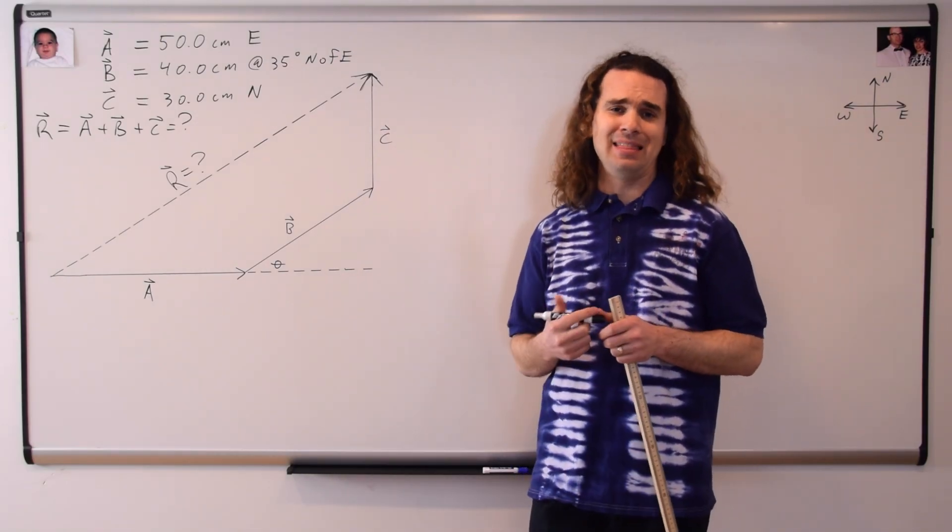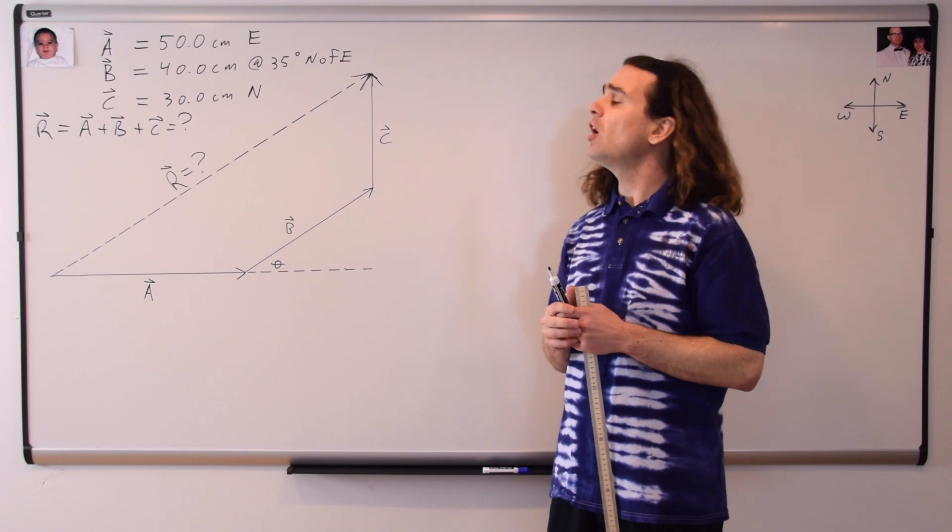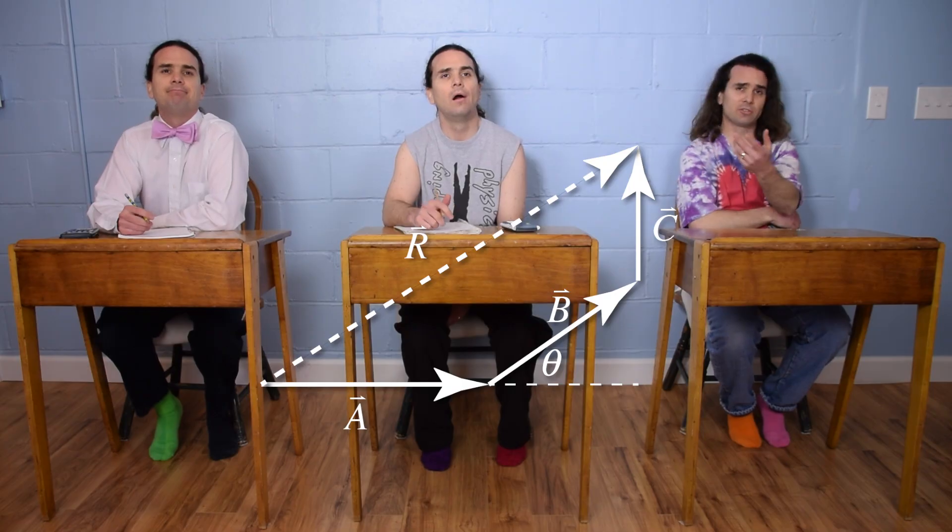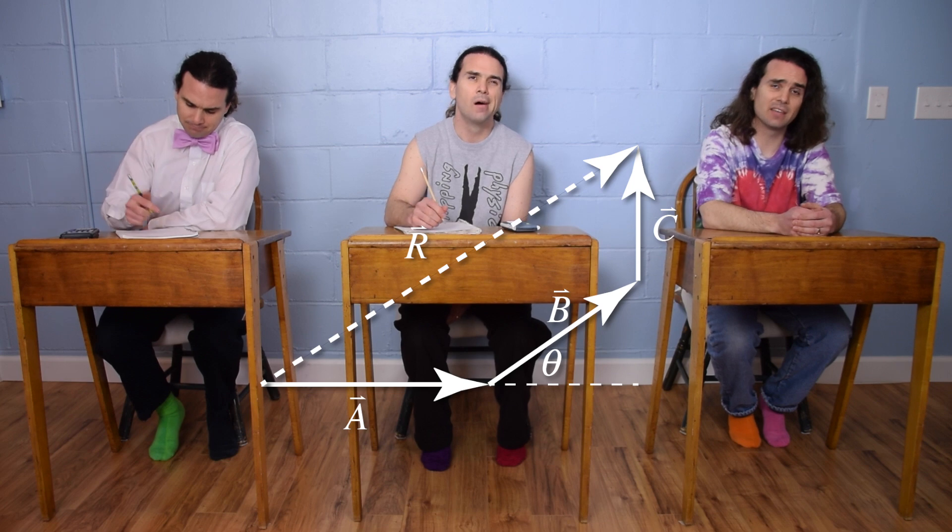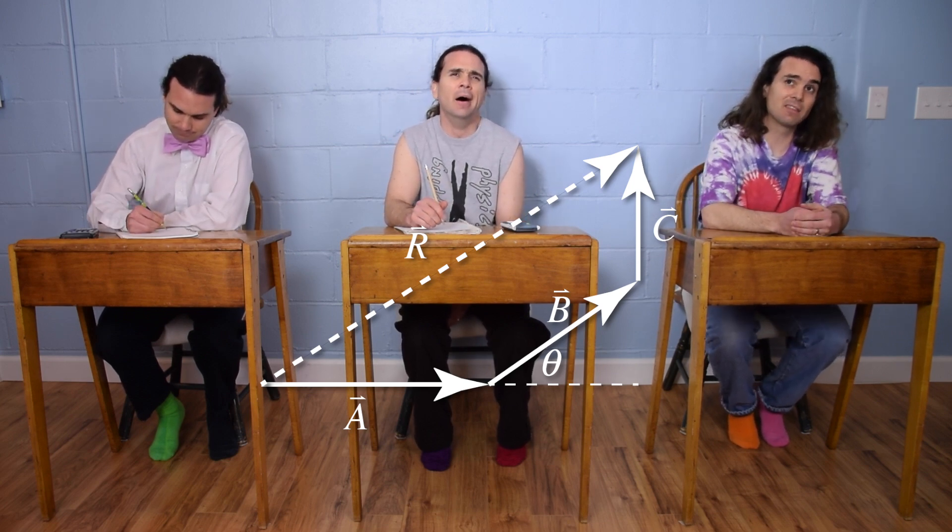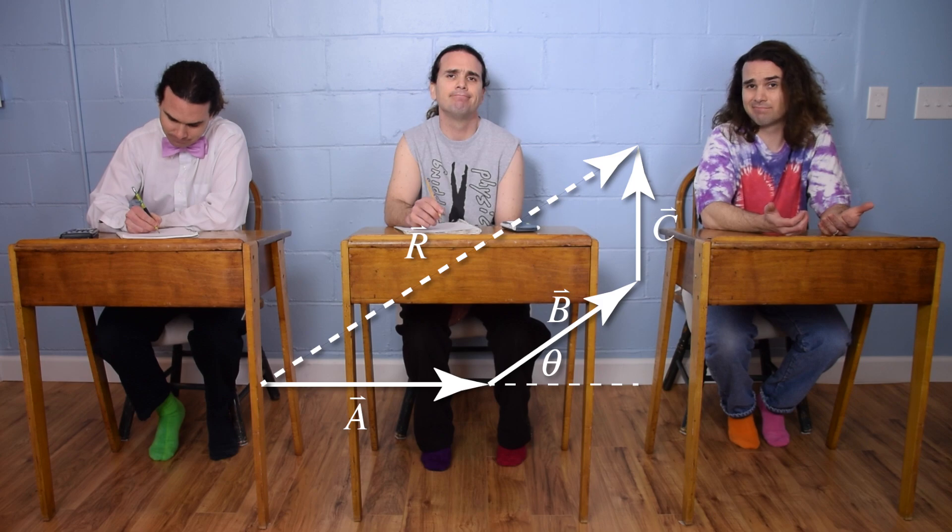At this point, we can't use the Pythagorean Theorem, or SOHCAHTOA, because we don't even have a triangle. We could draw a line from the start of vector A to the end of vector B, and then we could use the law of cosines to determine the length of that line, and then we could... Mr. P, Bo, please stop.